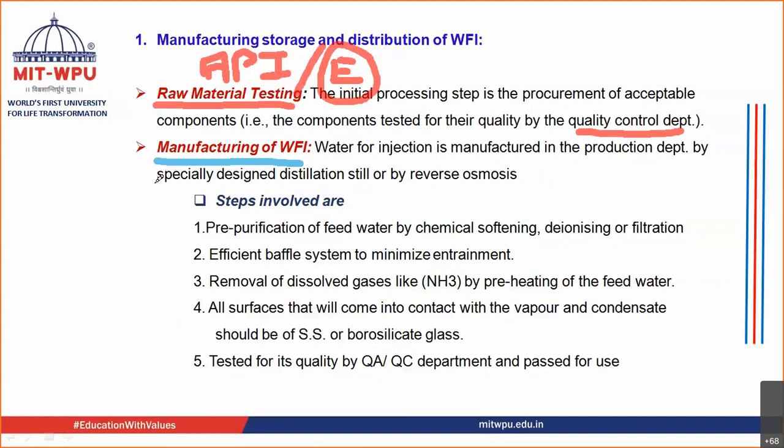These are small, quick tests that you carry out to determine whether your water is of good quality. The quality control department is also going to check your API, check your excipient, and check your water for injection. Once they have passed all the ingredients, then and only then you are going to start the manufacturing.